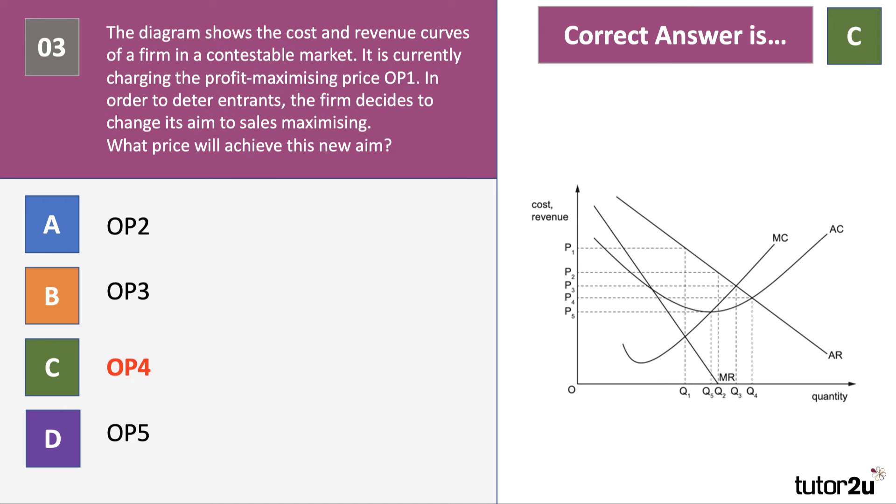it's the intersection between average cost and average revenue, which is output Q4, which implies a price of P4. At that price, the revenue per unit just equals the cost per unit and you're making only normal profit.